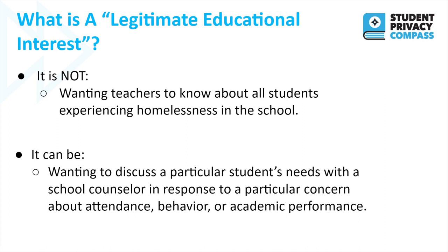There are some easy examples. Sending an email to every teacher in the school about every student experiencing homelessness would be a terrible violation of McKinney-Vento and FERPA. Even letting a teacher know about all the students experiencing homelessness in his or her class could be a violation, because that information is private — information that students and parents often don't want anyone else to know because of stigma, embarrassment, and fear. It's important to talk to students and families about who they would like their information shared with and why.